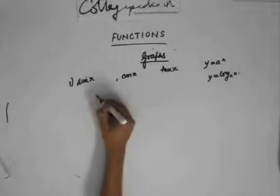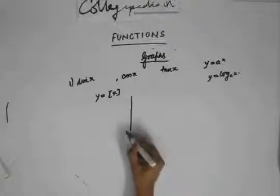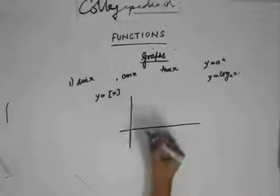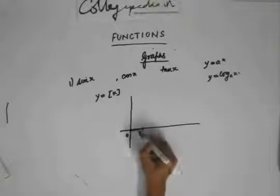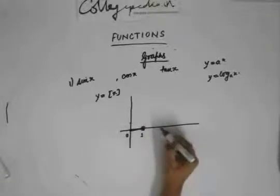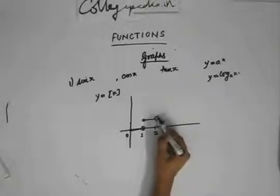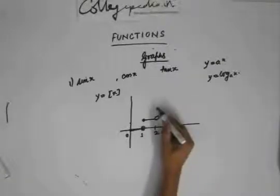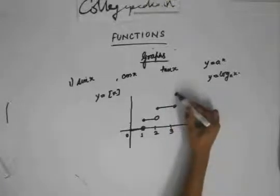My main focus is to draw the graph of y equals box of x — the greatest integer function. The box of x is always an integer, so if I take any value between 0 and 1, the box of that value is 0. From the interval 1 to 2, the box is 1 — closed at the left, open at the right. From 2 to 3 it's 2, and from 3 to 4 it's 3.